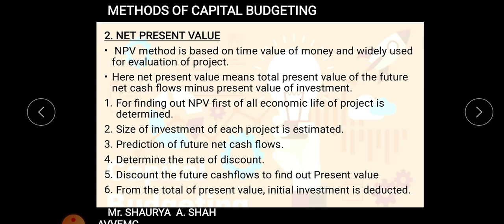To find out NPV, follow these steps. The very first step is to decide the economic life of the project — for how many years the project will provide cash inflows, which is the economic life. The second step is to determine the size of investment for each project. The third step is prediction of future net cash flows — how much cash flows you will receive.